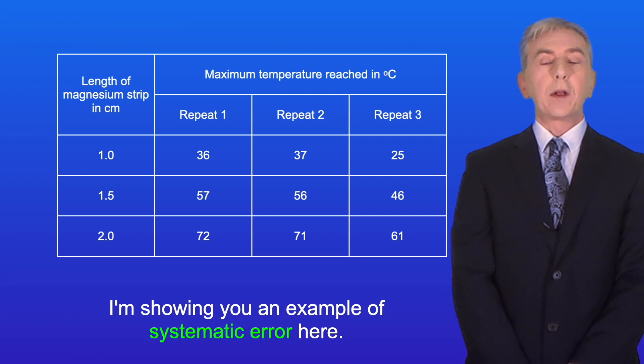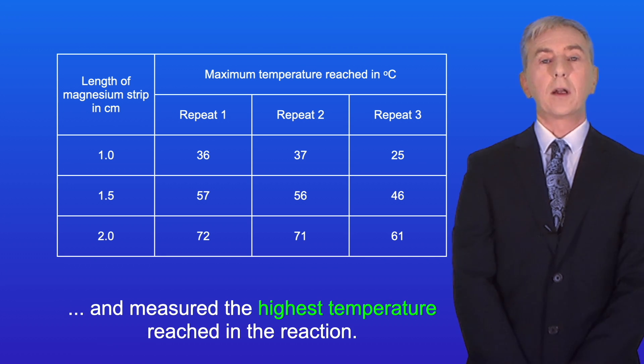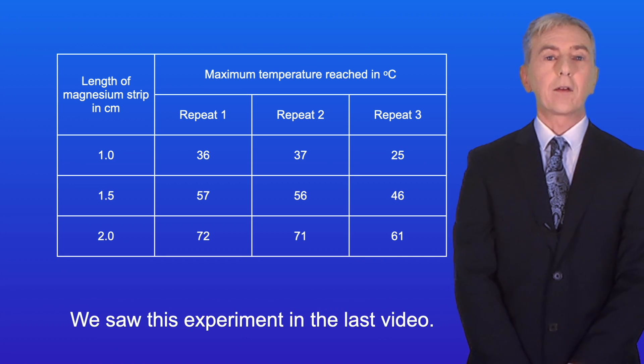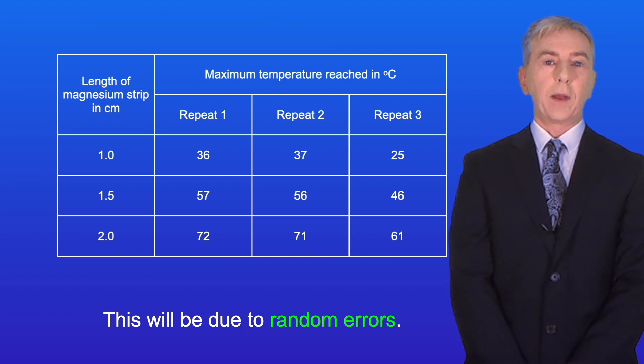I'm showing you an example of systematic error here. In this experiment students reacted different lengths of magnesium with acid and measured the highest temperature reached in the reaction. And we saw this experiment in the last video. Now we can see that repeats one and two are slightly different to each other and this will be due to random errors.